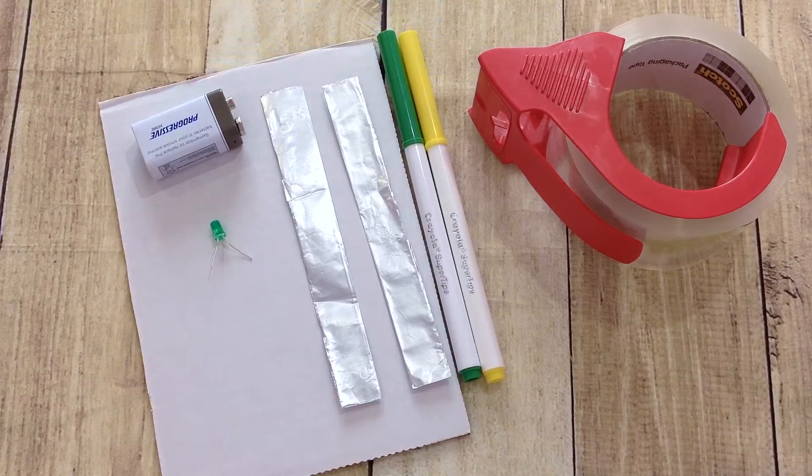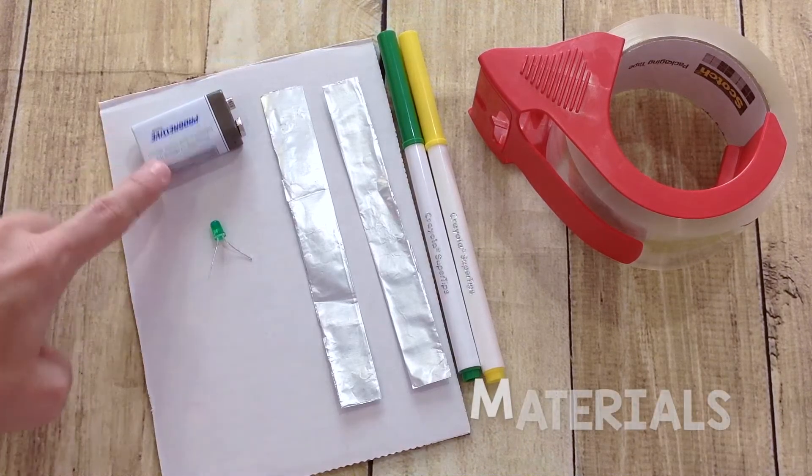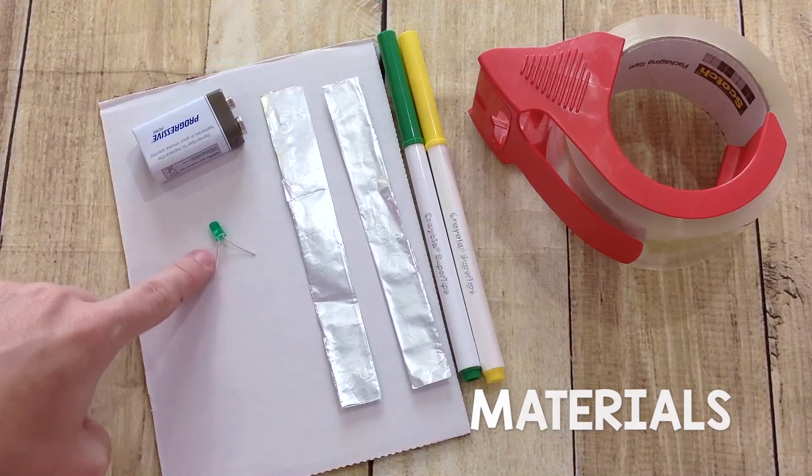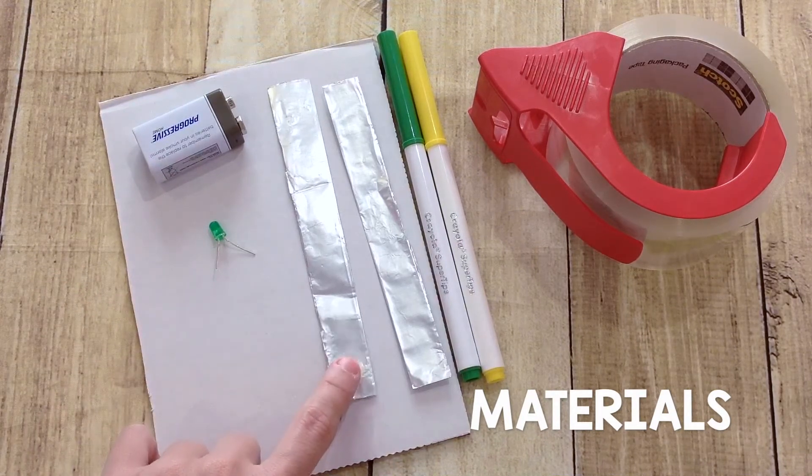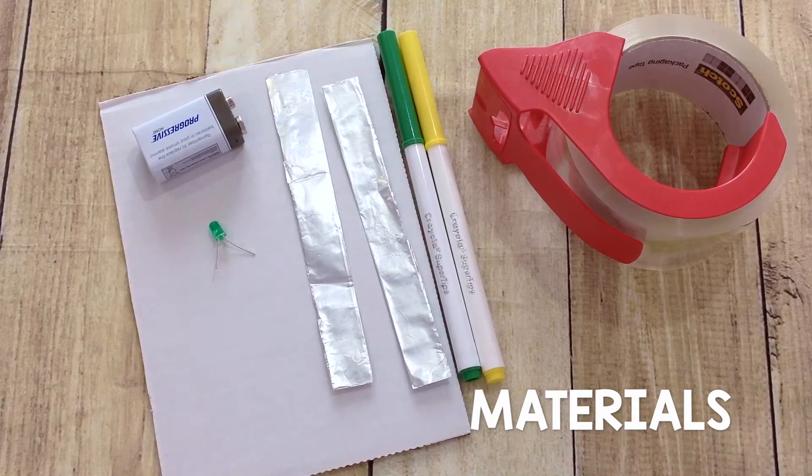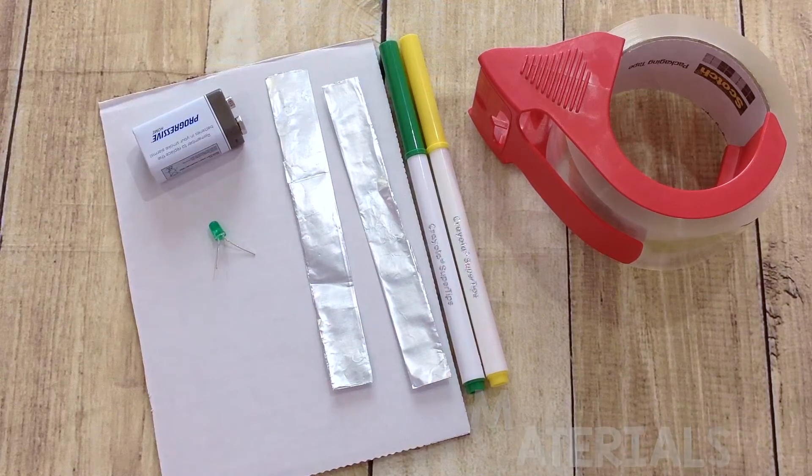You're going to need the following materials: a 9-volt battery, an LED, a piece of cardboard, aluminum foil cut and folded into thin strips, markers, and packing tape.